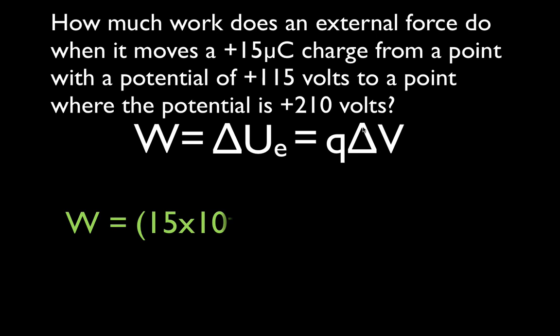When you calculate the change in potential, you have to remember it's the final potential minus the initial. You must do that because when we calculate changes in potential energy or potential difference, we have to make sure we use all of our signs. In this case they're all positive, but in some problems you're going to have negatives and you need to use those negative signs. So the potential energy equals the amount of charge: plus 15 microcoulombs. Microcoulombs is 10 to the minus 6 — we have to have coulombs, not microcoulombs, so we convert that.